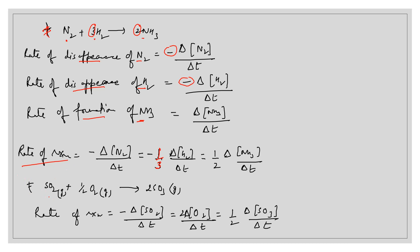Another example: 2SO₂ + O₂ → 2SO₃. The rate of reaction = −ΔSO₂/Δt = −2·ΔO₂/Δt = (1/2)ΔSO₃/Δt. We consider the stoichiometric coefficients and take 1 divided by the stoichiometric coefficient while expressing the rate of reaction with respect to each reactant and product in order to equate them.